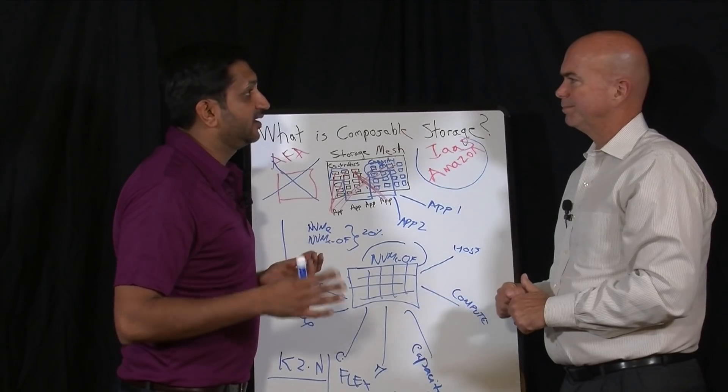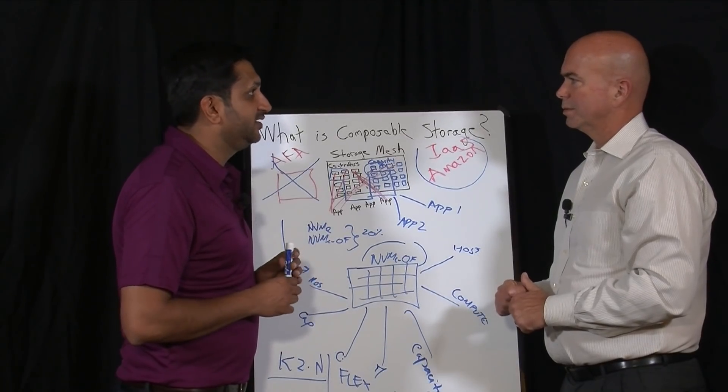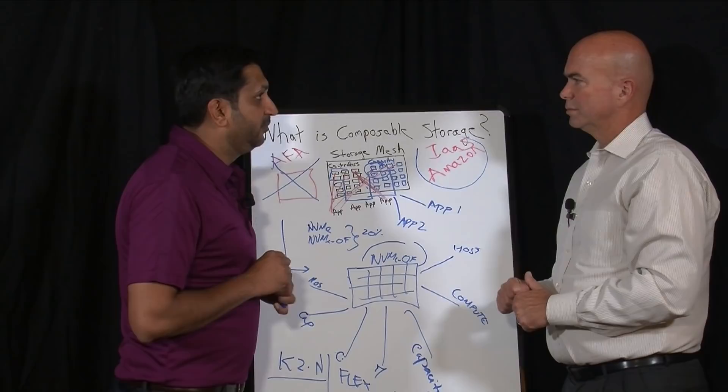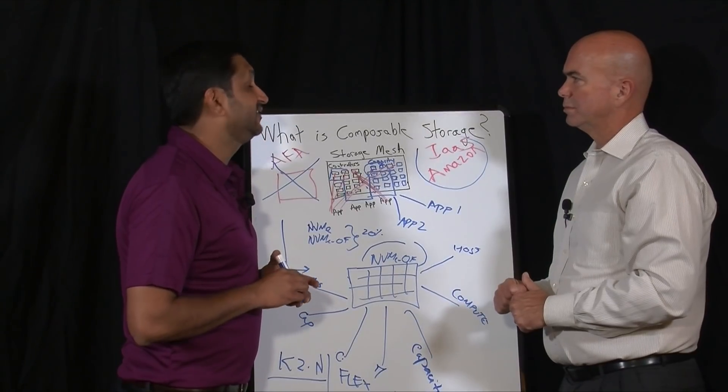The K2.N and Kaminario Flex are products which are slated to be released. K2.N is slated to be released in the first quarter of 2018. And then Kaminario Flex, which is the orchestration and dynamic analytics layer, will be released in the second half of 2018.